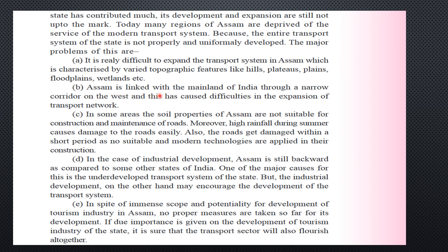Assam is linked with the mainland of India through the narrow Siliguri corridor. A large part of the southern and western portions of Assam became part of Bangladesh after partition, leaving only this small link through the Siliguri corridor. Additionally, in some areas the soil properties of Assam are not suitable for construction and maintenance of roads, as the soil is not firm enough to support a transportation network. High rainfall in Assam during the monsoon also causes easy damage to roads.